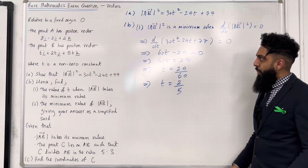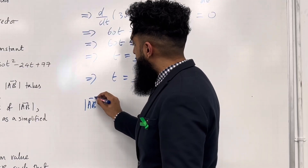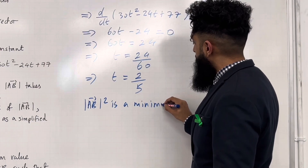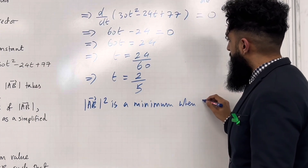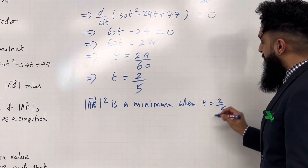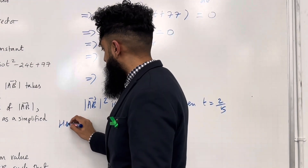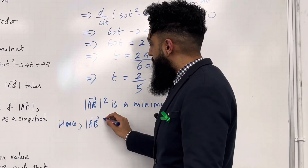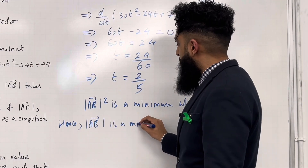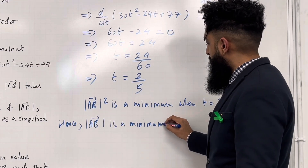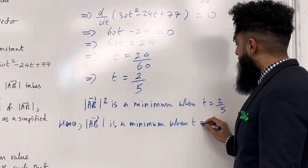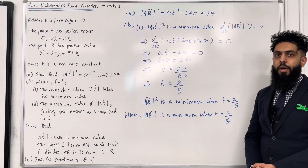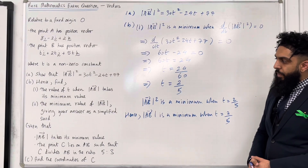Simplifying, I get t equal to 2 over 5. So we know that the magnitude of AB squared is a minimum when t equals 2 over 5. Hence, it is also true that the magnitude of AB is a minimum when t equals 2 over 5. This completes part 1 of part B. Let's move on to part 2 of part B.